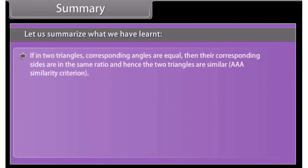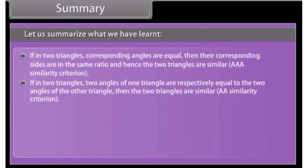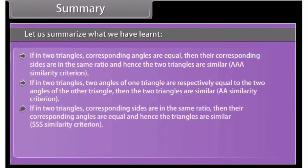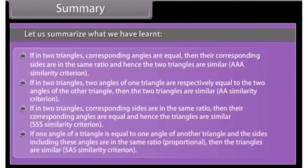If in two triangles corresponding angles are equal, then their corresponding sides are in the same ratio and hence the two triangles are similar — AAA similarity criterion. If two angles of one triangle are respectively equal to two angles of another triangle, then the two triangles are similar — AA similarity criterion. If corresponding sides are in the same ratio, then corresponding angles are equal and the triangles are similar — SSS similarity criterion. If one angle of a triangle equals one angle of another and the sides including these angles are proportional, then the triangles are similar — SAS similarity criterion.